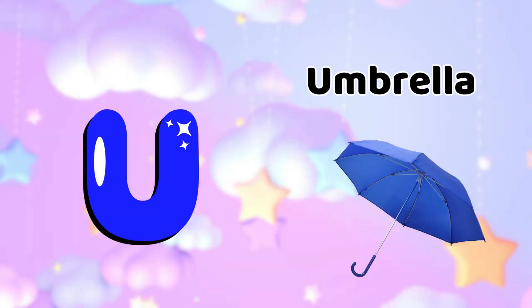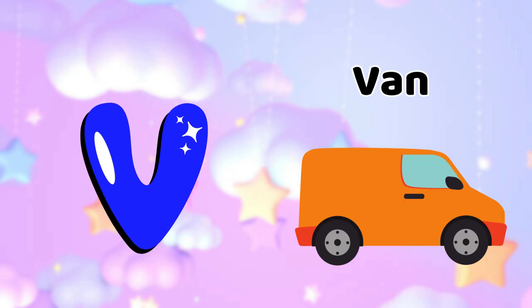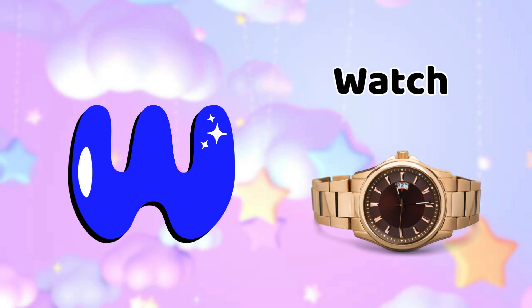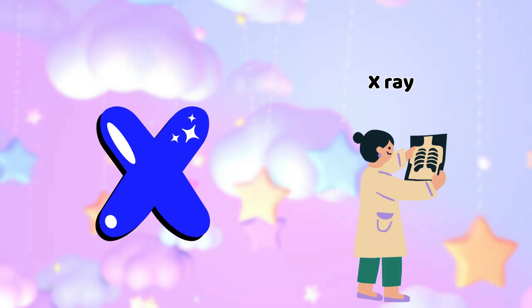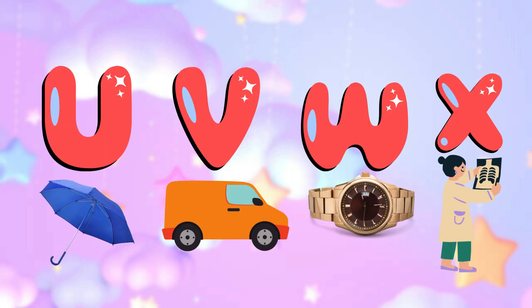U is for Umbrella, U-U-Umbrella. V is for Van, V-V-Van. W is for Watch, W-W-Watch. X is for X-Ray, X-X-X-Ray.